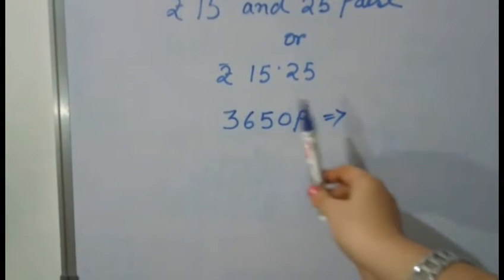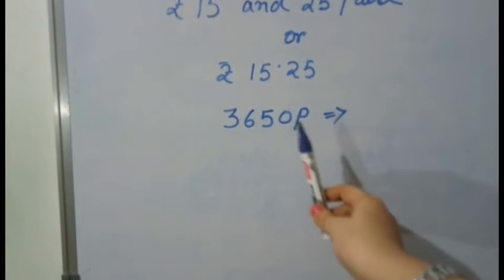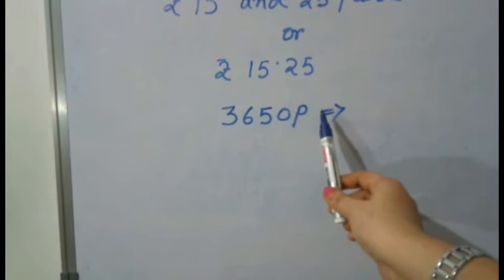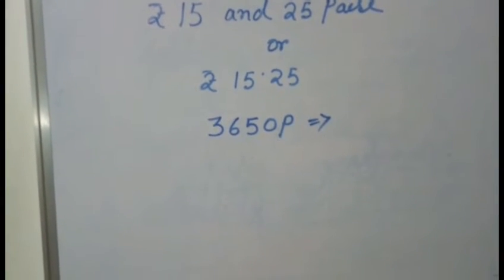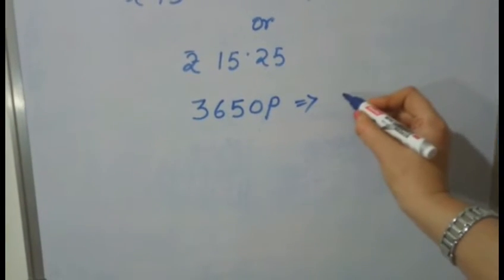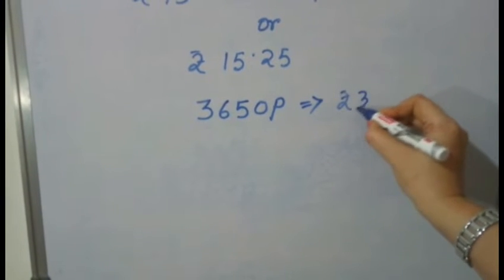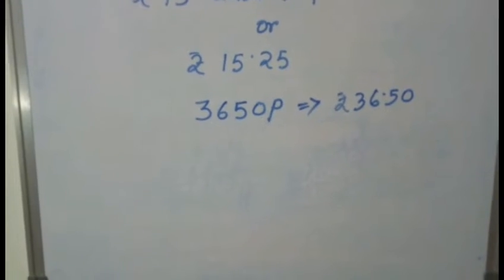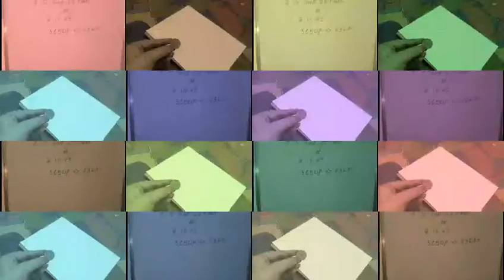Suppose, we want to convert 3650p means 3,650 paise. We have to convert. So, without dividing simply we can write like this Rupees 36.50. This means also Rupees 36 and 50 paise.